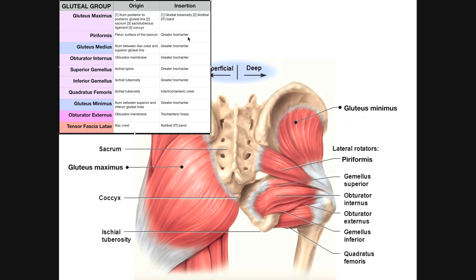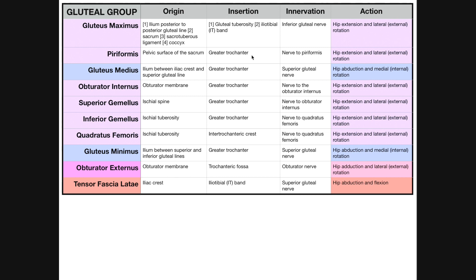One general thing about all these lateral rotators: all of their origins are medial — the piriformis on the sacrum, the others somewhere on the pelvis — while their insertions are on the proximal femur, so lateral. If you get confused, remember origins are all medial. The piriformis inserts on the greater trochanter, just like the vast majority of the external rotators. Its nerve supply is the nerve to the piriformis, and in addition to being an external rotator of the hip, the piriformis also has some role in hip extension.